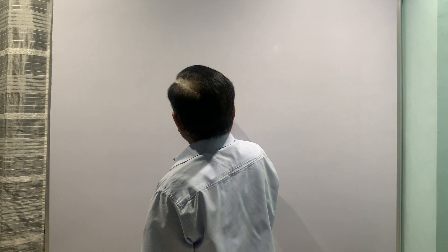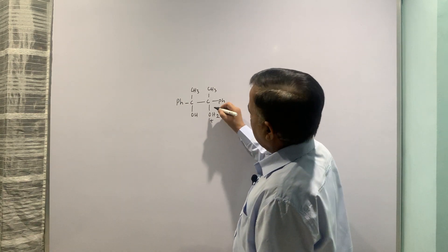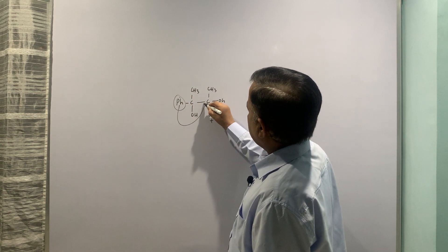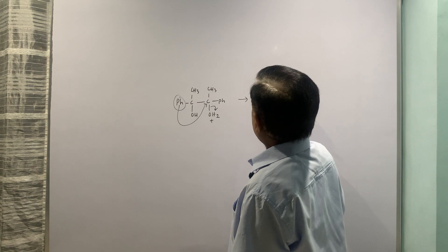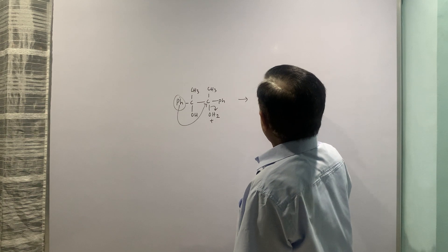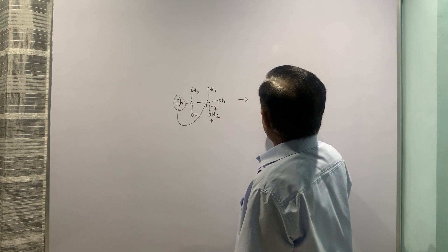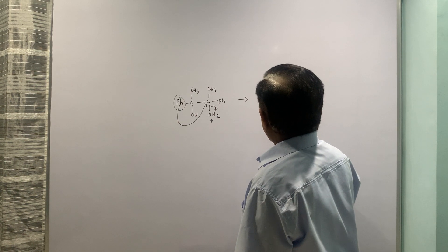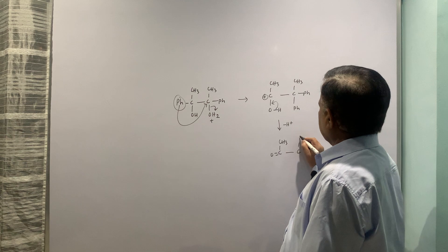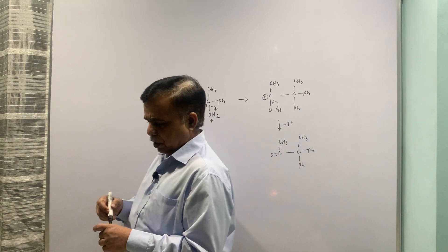With protonation of one of the OH, loss of this intermediate step, then migration of this ring. Eventually what you will have, you have a plus charge here, CH3, Ph, Ph and then loss of H+. So you will be having CO, CH3 here and the other groups are as it is. This is pinacol-pinacolone rearrangement.